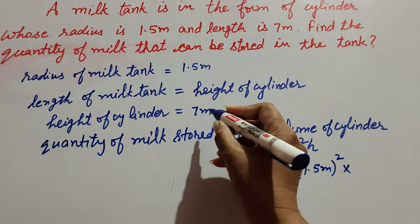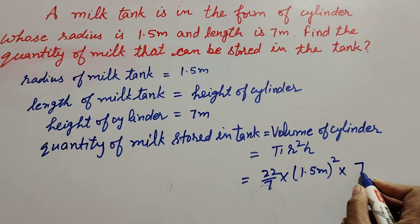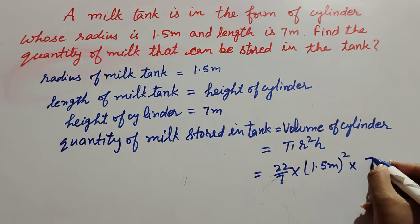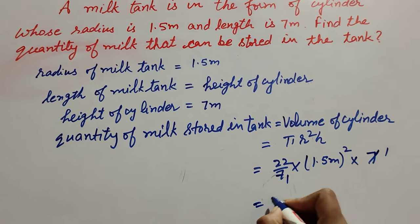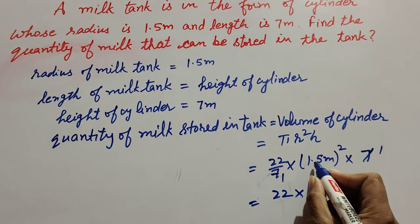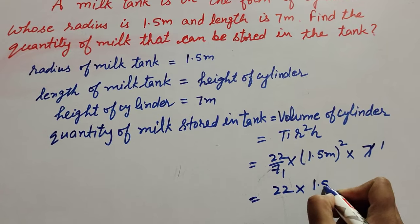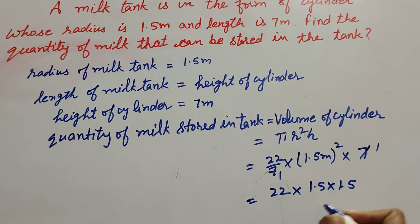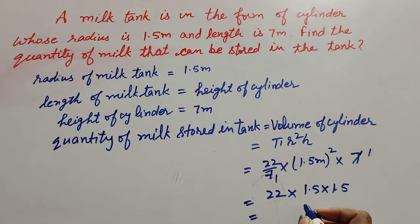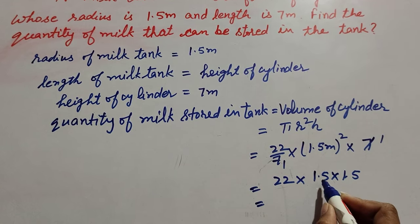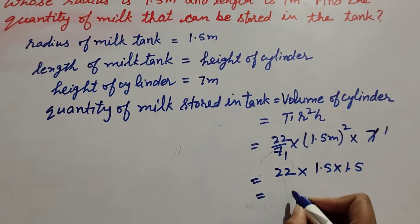So we have 22/7 multiplied by (1.5)² multiplied by 7. The 7 in the denominator and 7 in the numerator cancel out. This gives us 22 multiplied by 1.5 multiplied by 1.5, and we get the answer 49.5 meter cube.